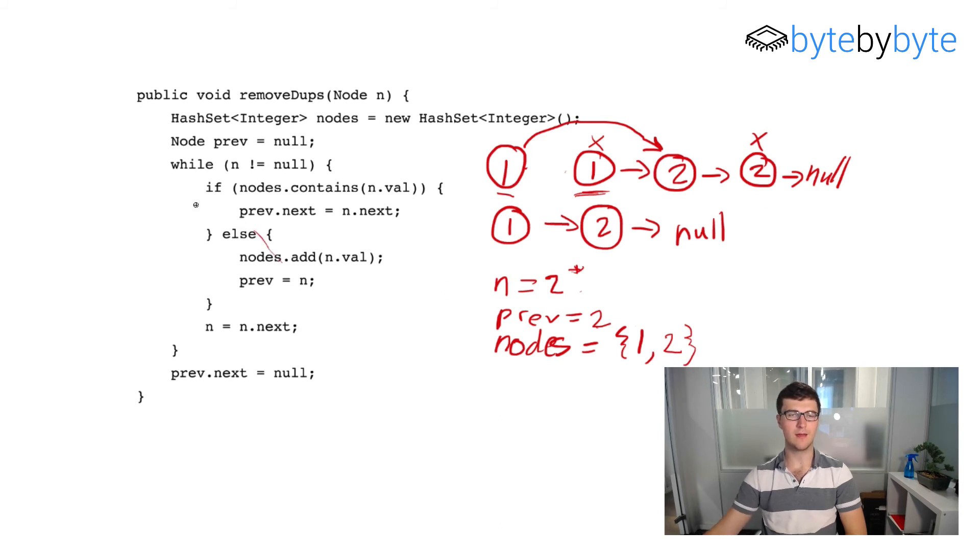So finally we come up to our while if again, n is still not null. Nodes does contain so prev.next equals n.next. And so prev is this, it's this two. So prev.next equals n.next which is null which is what we want. And then we're going to say n equals n.next so n is equal to null.